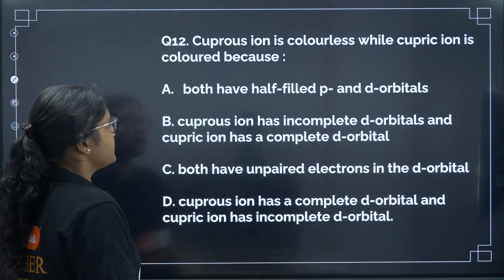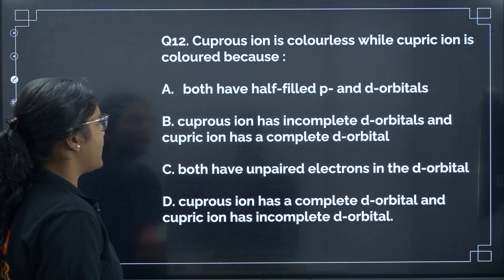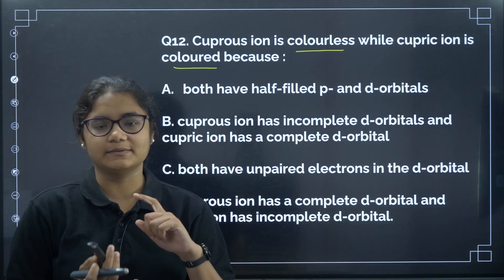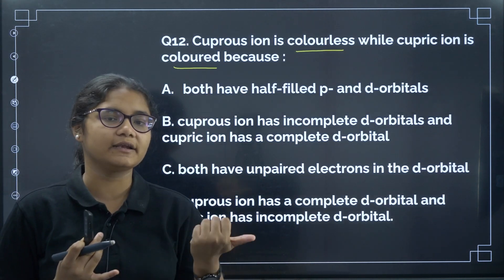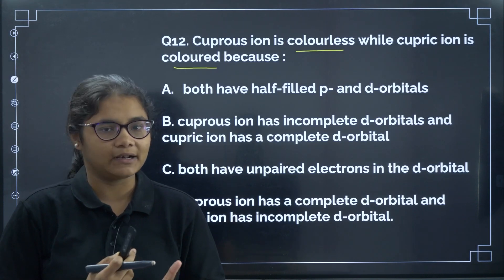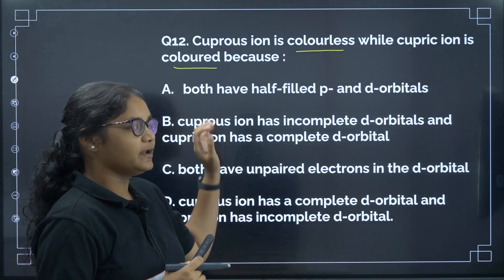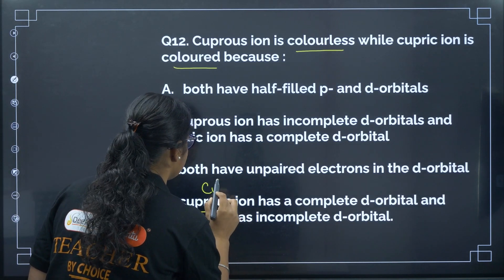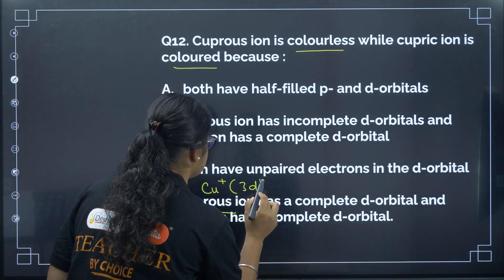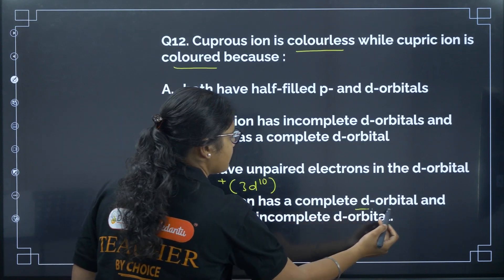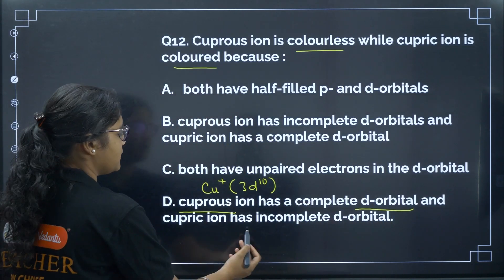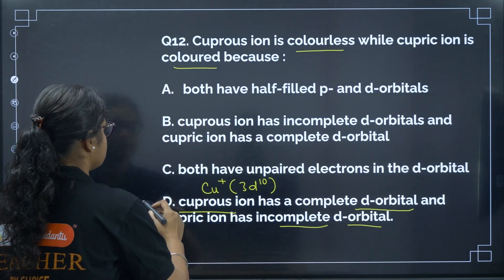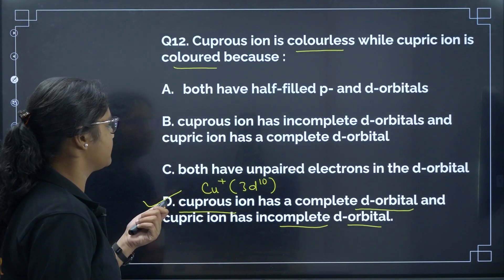Question 12: Cuprous ion is colorless while cupric ion is colored. Colorless means it has no unpaired electrons. Cuprous ion Cu⁺ has electronic configuration 3d¹⁰ — a completely filled d orbital with no unpaired electrons. Cupric ion Cu²⁺ has an incomplete d orbital with unpaired electrons, which is why it is colored. The correct answer is option D.